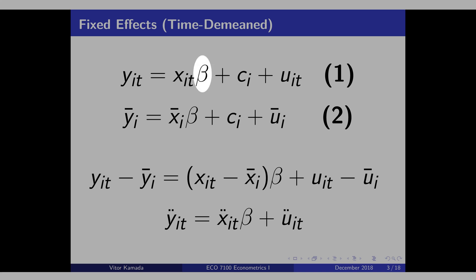The consequence is, beta will be biased, because the default assumption is that Ci is correlated with Xit. If you assume that Ci is uncorrelated with Xit, this will be the case of random effect. The goal of fixed effect is to eliminate this Ci here.